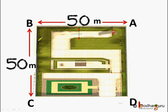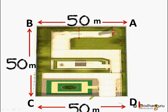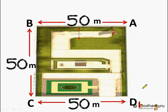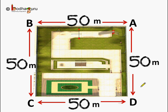Then from B to C he covered again a distance of 50 meters. Next, from C to D he covered again 50 meters. And again he covered 50 meters and he is back to where he started, which means he completed one round of the garden. So how much distance did he cover? That is 50 meters plus 50 meters plus 50 meters plus 50 meters.